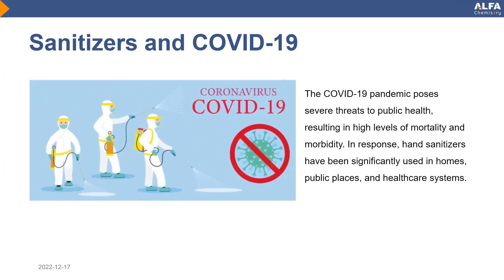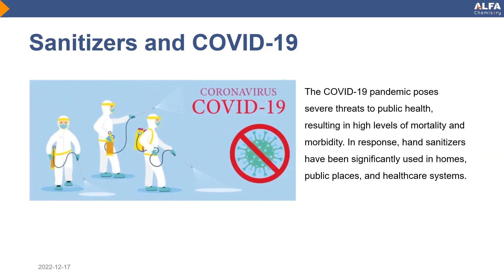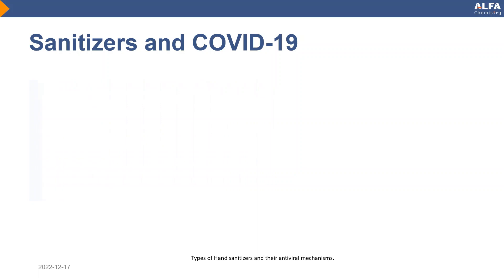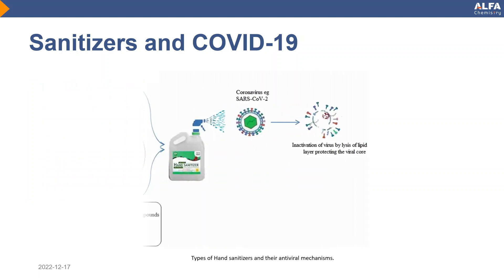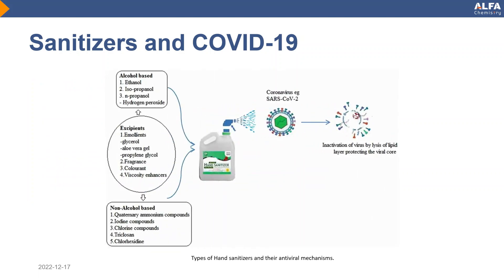The COVID-19 pandemic poses severe threats to public health, resulting in high levels of mortality and morbidity. In response, hand sanitizers have been significantly used in homes, public places, and healthcare systems. Hand sanitizers are classified into two broad groups: alcohol and non-alcohol based. Traditionally, alcohol-based hand sanitizers contain ethanol and other short-chained alcohols ranging from 60% to 70% as the active ingredient responsible for the antimicrobial activity, which can sometimes cause skin dryness.